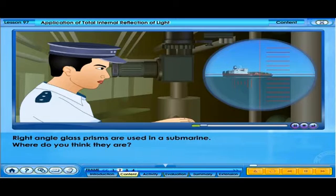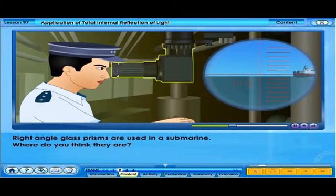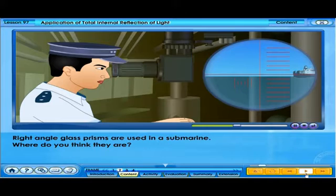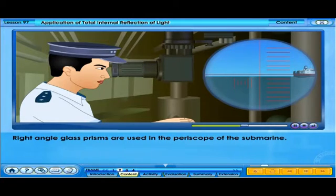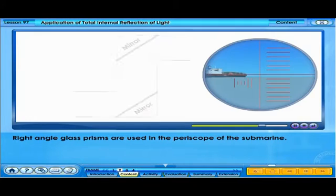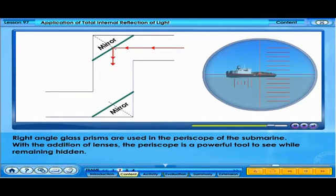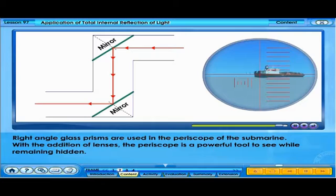Right angle glass prisms are used in a submarine. Where do you think they are? Right angle glass prisms are used in the periscope of the submarine. With the addition of lenses, the periscope is a powerful tool to see while remaining hidden.